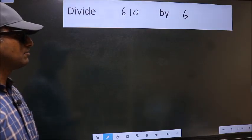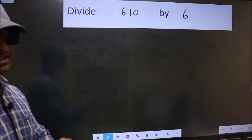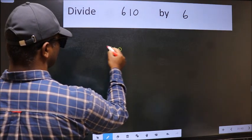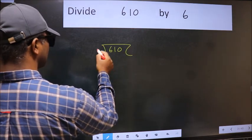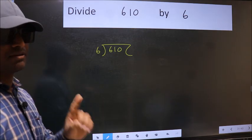Divide 610 by 6. To do this division, we should frame it in this way: 610 here and 6 here. This is your step 1.